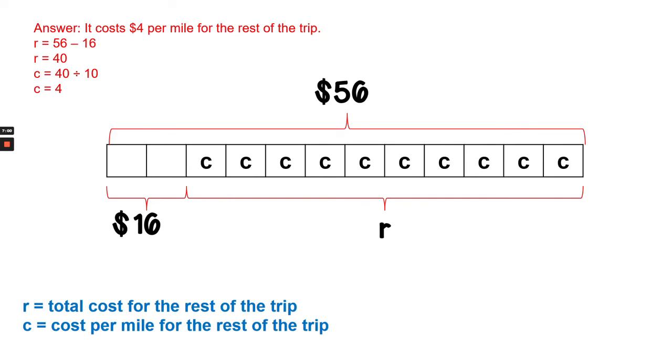Answer: It costs $4 per mile for the rest of the trip. We found that answer by subtracting 16 from 56 to get 40, and then we divided 40 divided by 10 equals 4.